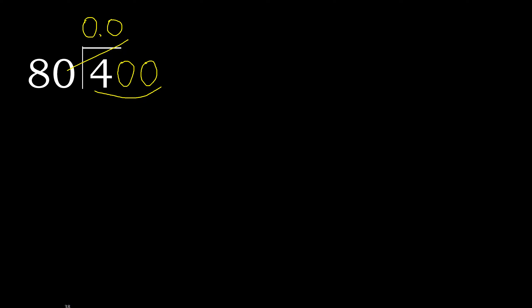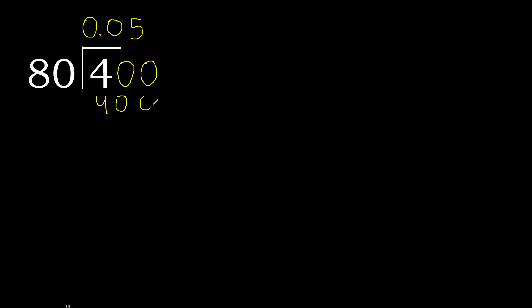80 multiplied by 6 is greater. 80 multiplied by 5: 400 — not greater. Subtract: 0. Therefore finished. 4 divided by 80 equals 0.05.